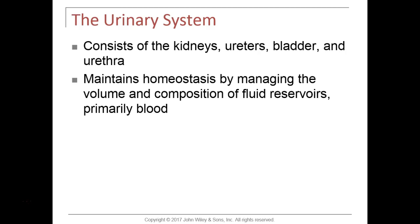The urinary system consists of two kidneys, two ureters, one bladder, and one urethra. The gross anatomy is quite simple with these organs and structures. As you know, the kidneys maintain homeostasis by regulating the water volume and the composition of electrolytes and other solutes, primarily in the blood.